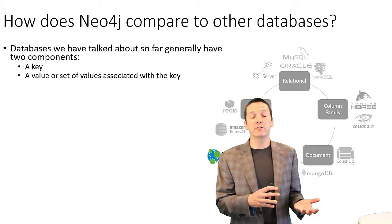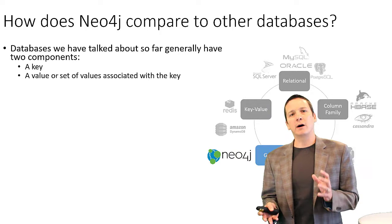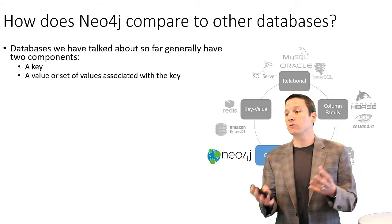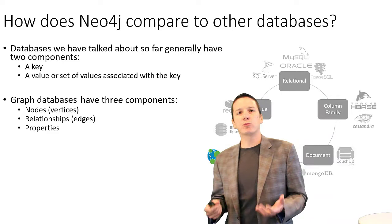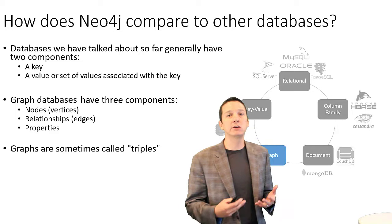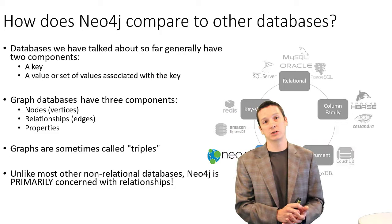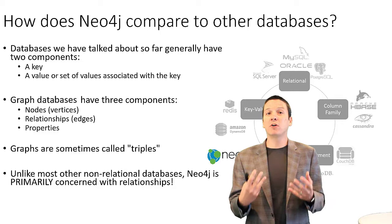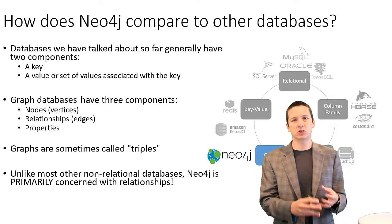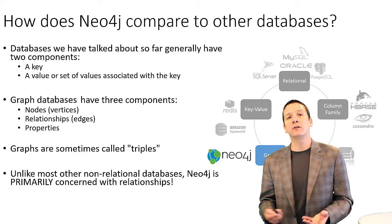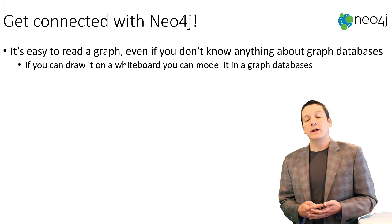Going a bit further into the comparison of Neo4j to other databases: typically the databases we've talked about have had two main elements — a key and some value or set of values associated with that key. Our graphs on the other hand have three components: nodes, relationships, and properties. We sometimes hear graph databases referred to as triples. And unlike most non-relational databases, Neo4j is really concerned about relationships. Most non-relational databases don't even have the concept of relationships between objects, so Neo4j is very different in that regard.